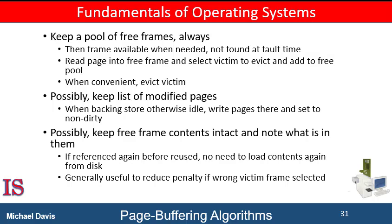Another modification is to keep a pool of free frames but to remember which page was in each frame. Since the frame contents are not modified when a page is written to secondary storage, the old page can be reused directly from the free frame pool if it's needed before the frame is reused. No I/O is needed in this case. When a page fault occurs, we first check whether the desired page is in the free frame pool. If it is not, we must select a free frame and read into it. This is similar to a caching routine, since we did not remove the contents of a frame but just placed it in the free frame pool. If that frame is called again, it might still be available in the free frame pool, therefore bypassing the need to reload it from memory.